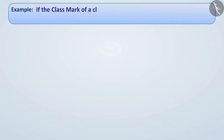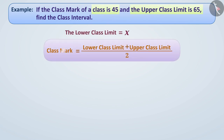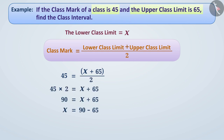Example: If the class mark of a class is 45 and the upper class limit is 65, find the class interval. Here the class mark is 45 and the upper class limit is 65. Let x be the lower class limit. We can say that the class mark 45 equals the sum of the lower class limit x and upper class limit 65 divided by 2. By simplifying it, we get the lower class limit x equal to 25. In this way, the class interval is 25 to 65.